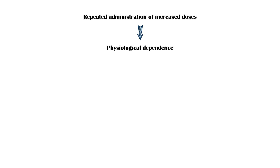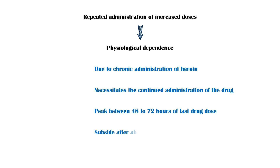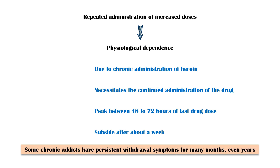Repeated administration of increased doses will induce a state called physiological dependence. It is an altered physiological state produced by chronic administration of heroin, which necessitates the continued administration of the drug. If not, the person will experience withdrawal symptoms, which peak between 48 to 72 hours of the last drug dose, and subside after about a week. However, some chronic addicts have shown persistent withdrawal symptoms for many months, or even years.